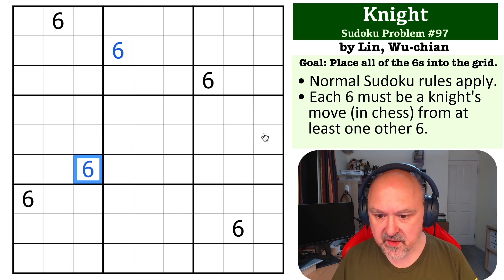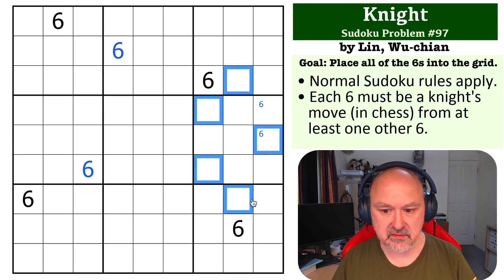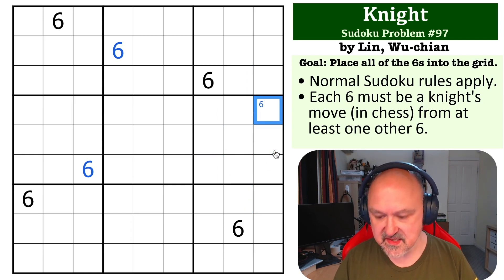Now, if I jump over here, these two cells are the only ones in this box that can be a six now. But this six would only see that cell, that cell, that cell, and that cell, none of which can be six. So this cannot be the six. This is the six.